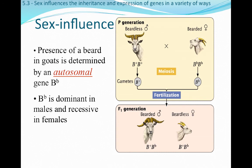First, let's start with traits that are influenced by the sex of the individual. The classic example of this is the appearance of beards in goats. If a goat has a beard, this is actually determined by an autosomal gene — a gene that is not on the sex chromosome. The two major forms of the gene are B-plus or B, and the little-b allele is going to be dominant in males but recessive in females.